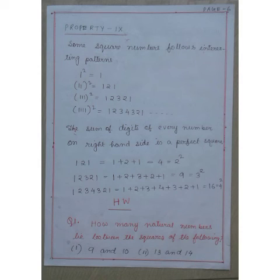Property 9. Square numbers follow interesting patterns. 1² is 1, 11² is 121, 111² is 12321.